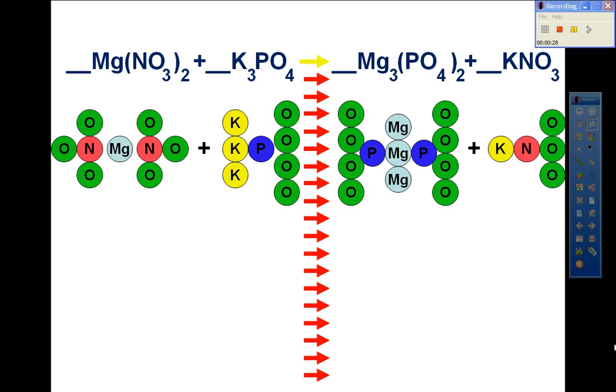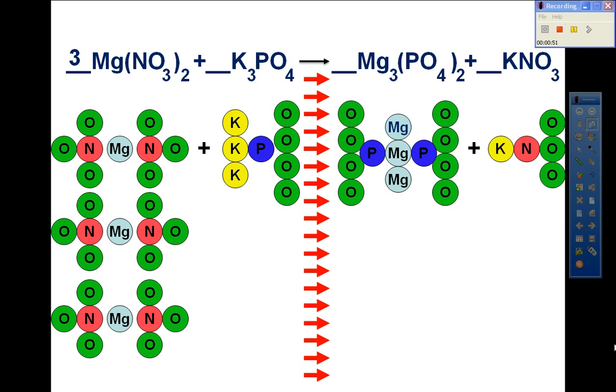First, we take a look at magnesium. It has one on the left side of the equation, and then because of the subscript, there are three on the right side. We balance that by bringing in a coefficient of three in front of the magnesium on the left side, which triples that molecule.